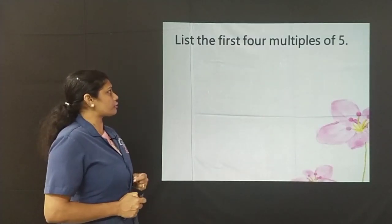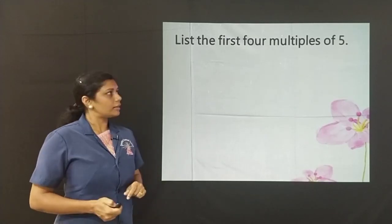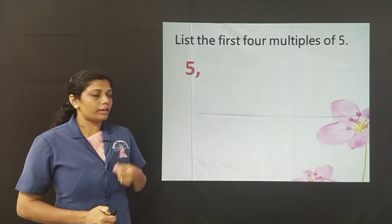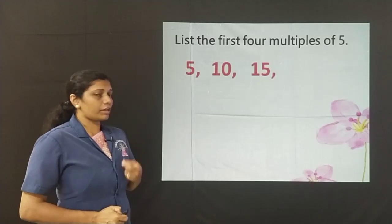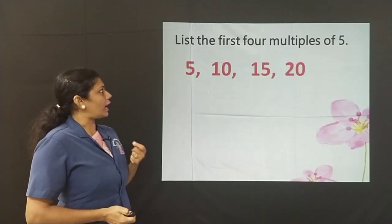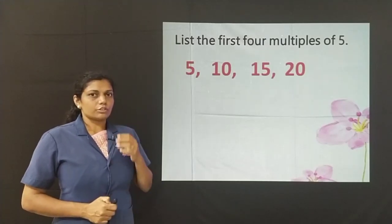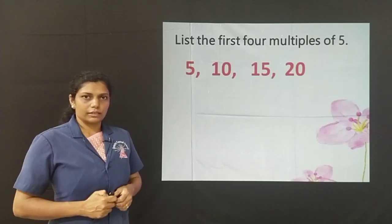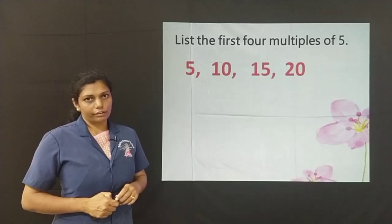List the first 4 multiples of 5. How to do this? 5 ones are 5, 5 twos are 10, 5 threes are 15, 5 fours are 20, and we have the 4 multiples of 5. So, the first 4 multiples are 5, 10, 15 and 20. It is nothing but writing the tables of 5.